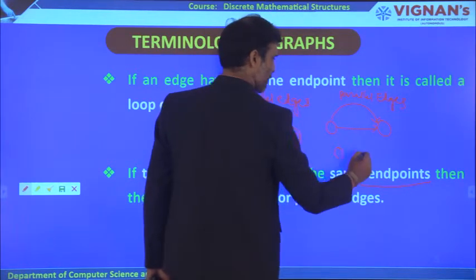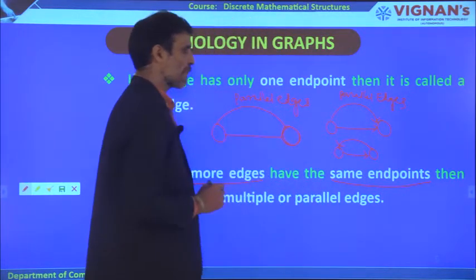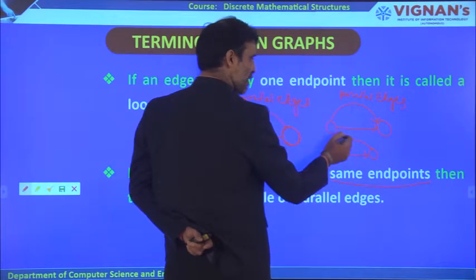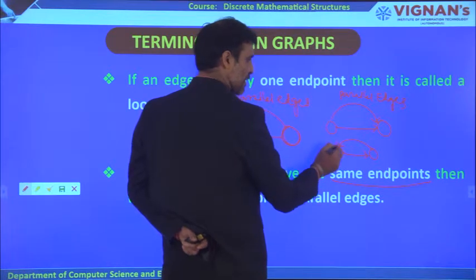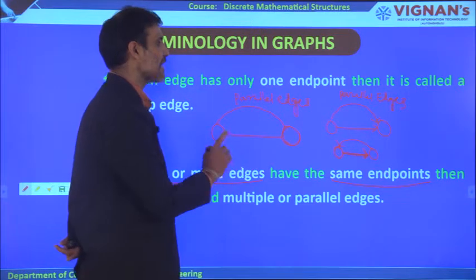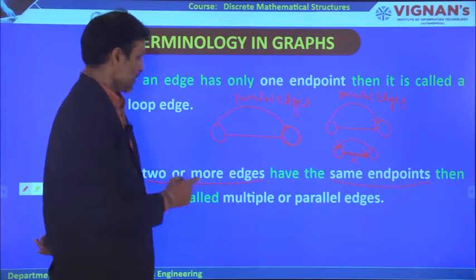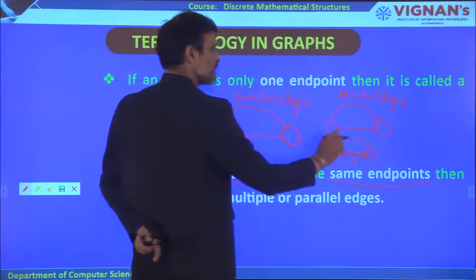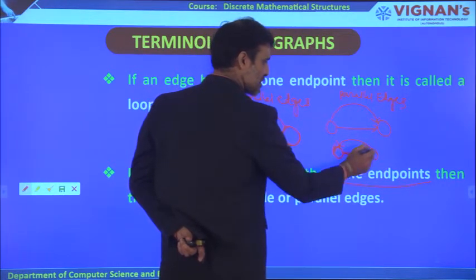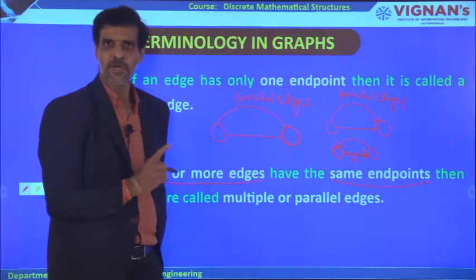If the two edges point in opposite directions — one going this way and one going that way, so they have different endpoints — they are not called parallel edges. Parallel edges means two or more edges that consist of the same endpoint.